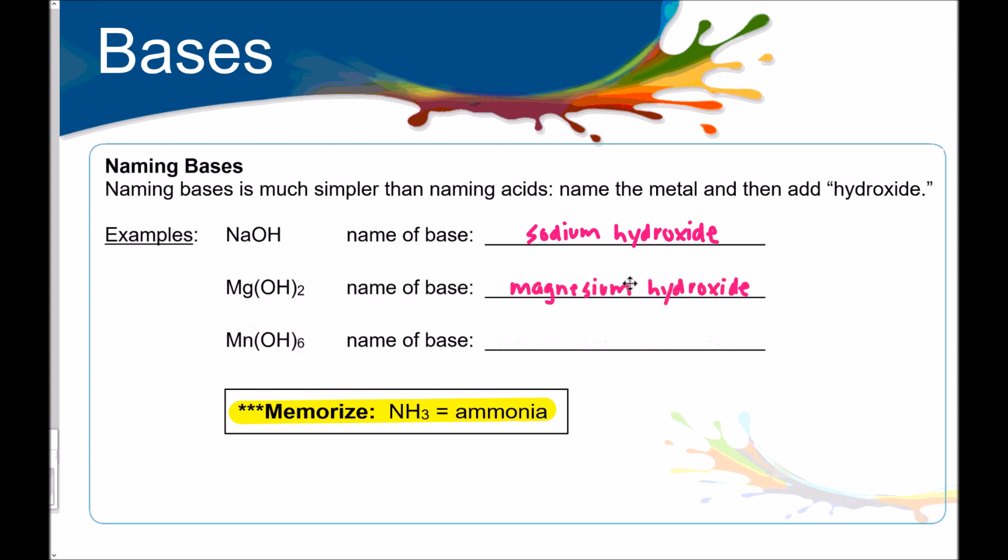Now I've got Mn(OH)6. This one is a little bit of a pain in the booty because Mn is manganese and it is a multivalent cation, which I know you love at this point. So, I'm going to reverse crisscross to figure out that manganese has a plus six charge. So, this is manganese six hydroxide, number six is VI. You have to have those roman numerals memorized.